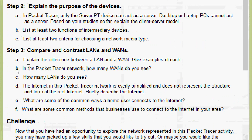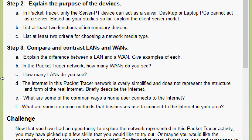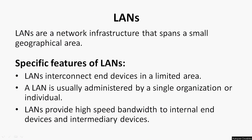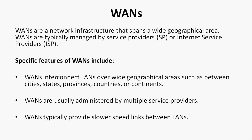Now coming to step three, compare and contrast LANs and WANs. Part A: explain the difference between a LAN and a WAN with examples. A local area network (LAN) is a network infrastructure that spans a small geographical area. LANs interconnect end devices in a limited area, are usually administered by a single organization or individual, and provide high-speed bandwidth to internal end devices and intermediary devices.